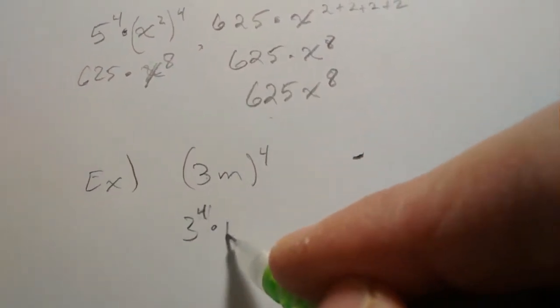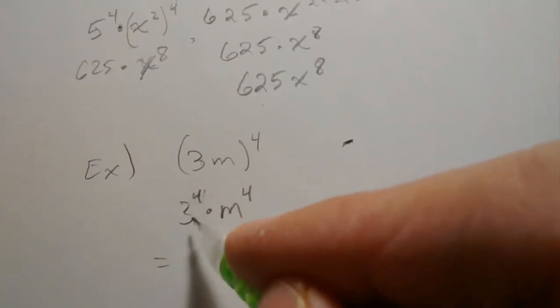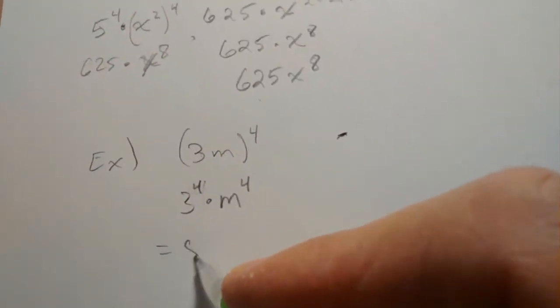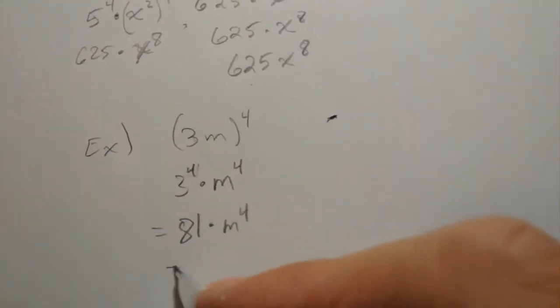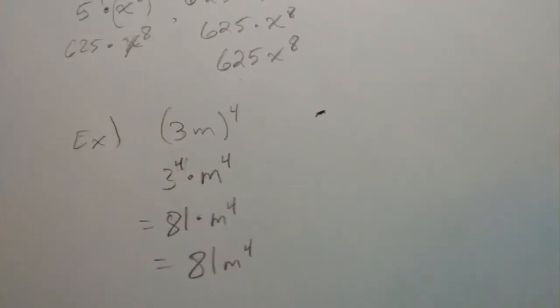So 3 to the 4th times m to the 4th. That's really 81 on your calculators, and that's just m to the 4th. So we can write it as 81m to the 4th.